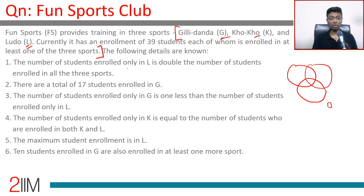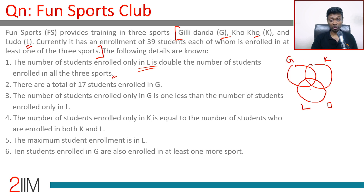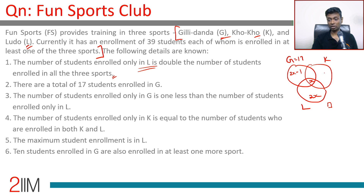The following details are known. The number of students enrolled only in L is double the number of students enrolled in all three sports. So if we call the all-three region x, then only-L is 2x. The total of students in G is 17. The number enrolled only in G is one less than only in L, so that's 2x minus 1. The number enrolled only in K equals the number enrolled in both K and L.